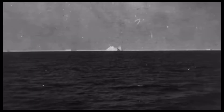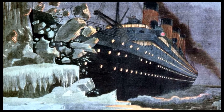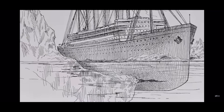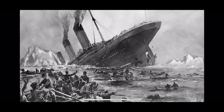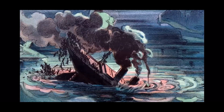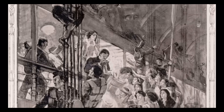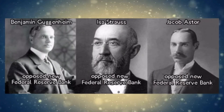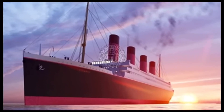Five days later the Titanic slams into an iceberg and sinks, also 400 nautical miles from Newfoundland. Even though Jacob Astor was the wealthiest man in the world, he couldn't find a seat in a lifeboat and sank with the ship, along with Isidor Straus and Benjamin Guggenheim. Shortly after, those who opposed them became the wealthiest men in the world, and the following year they created the Federal Reserve Bank.